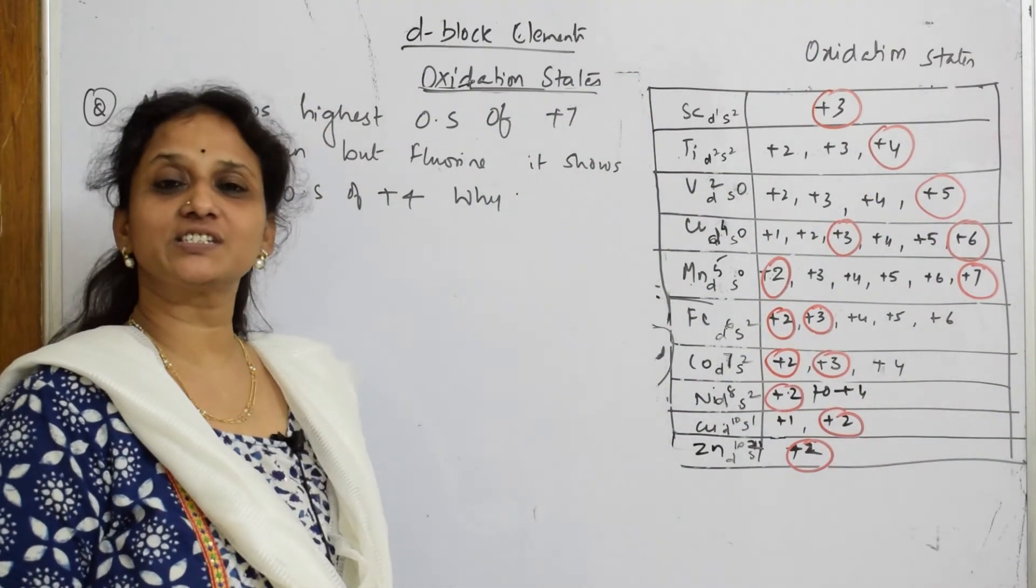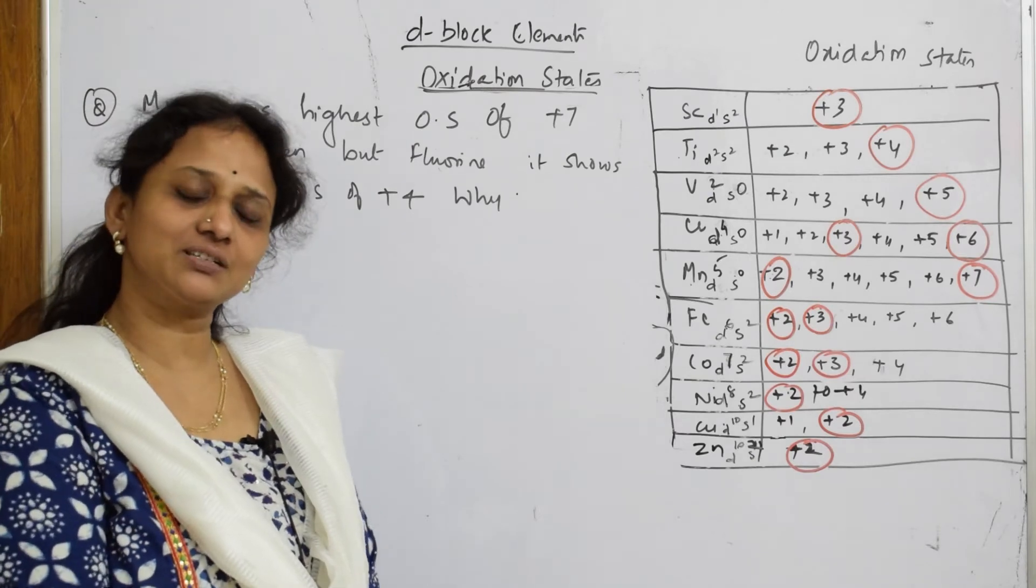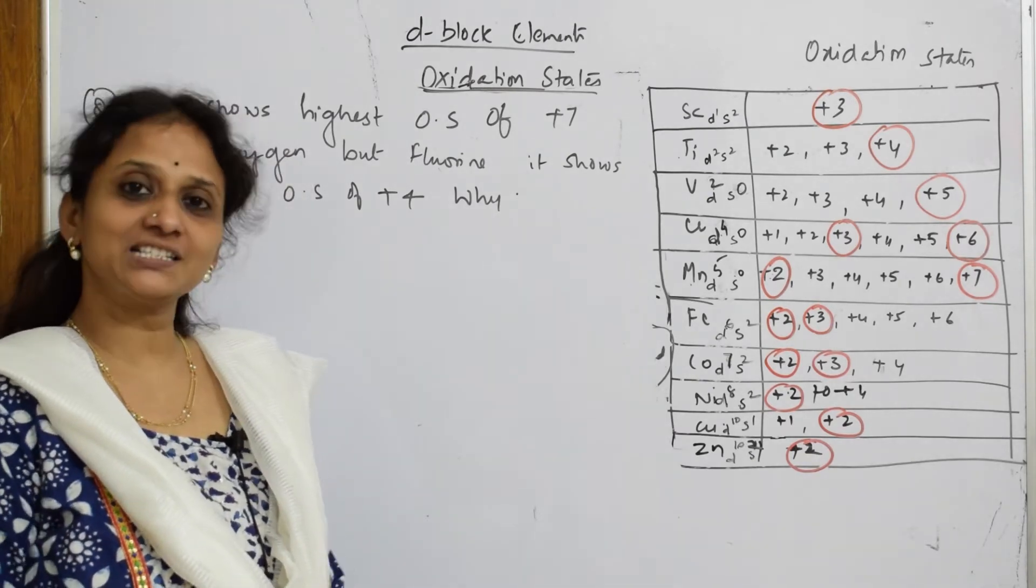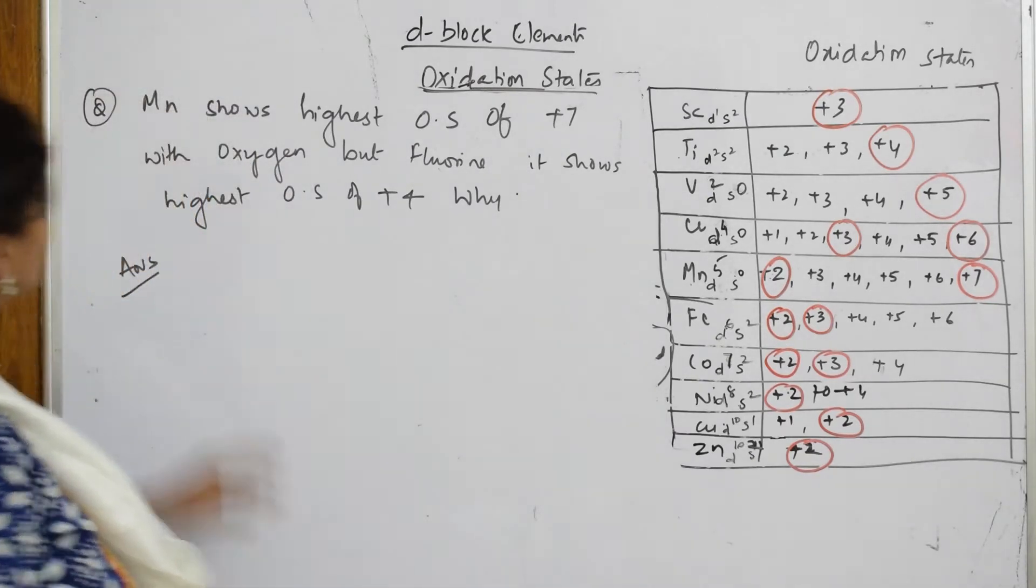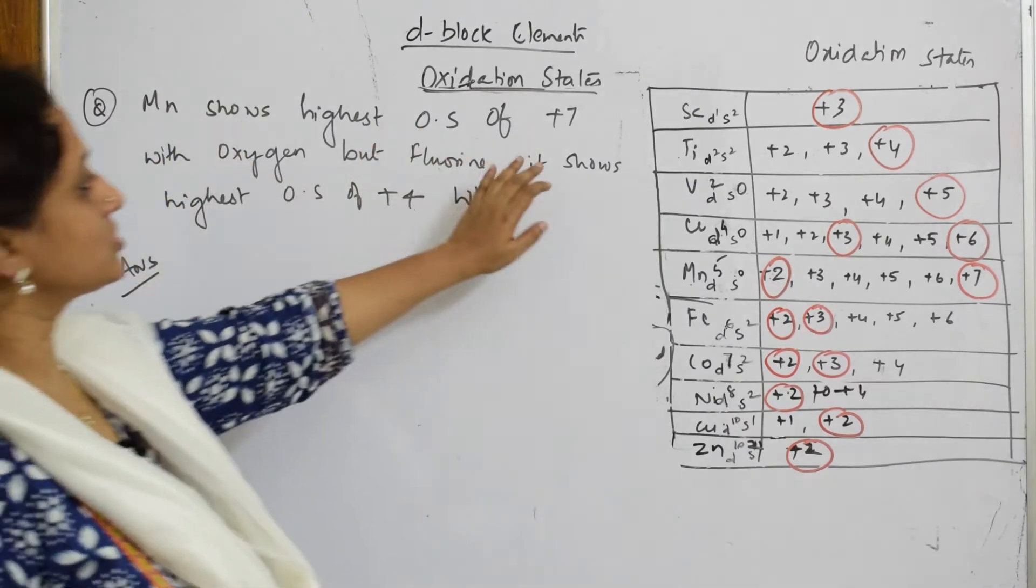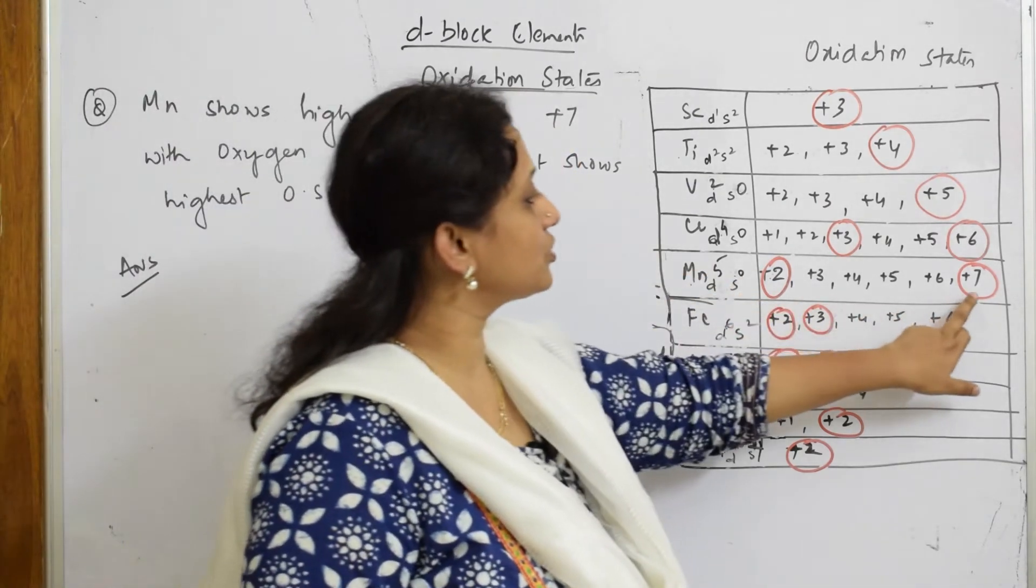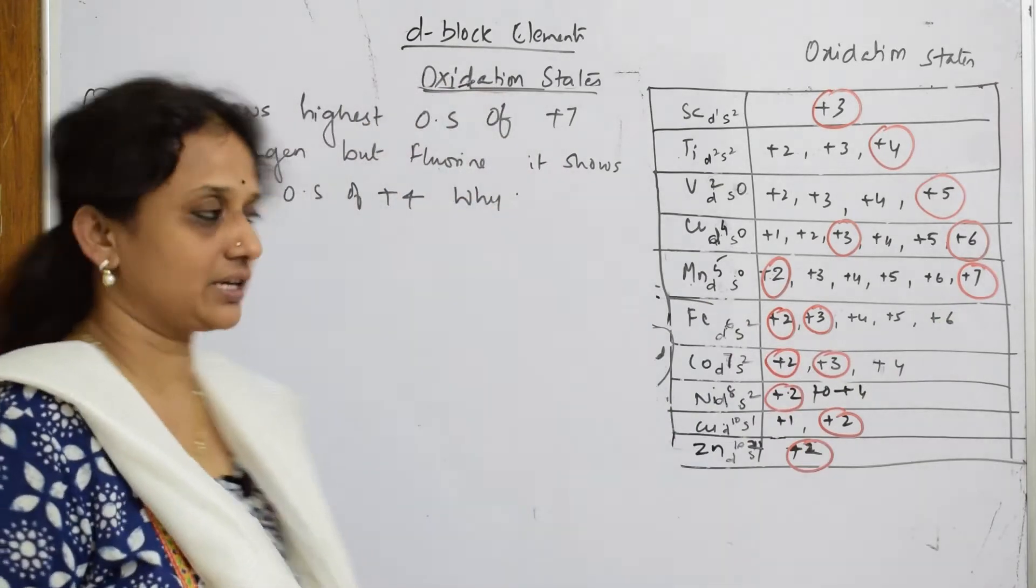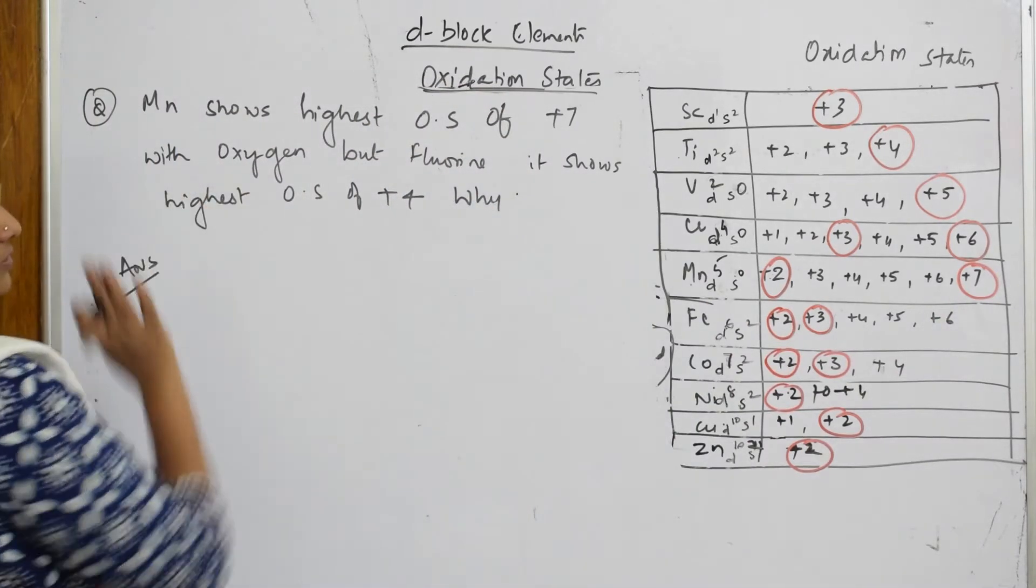Let us do one more question on oxidation state. This is a very interesting and commonly asked question. The question asks: manganese shows highest oxidation state of plus seven when we see the table. It shows the maximum oxidation state with oxygen.